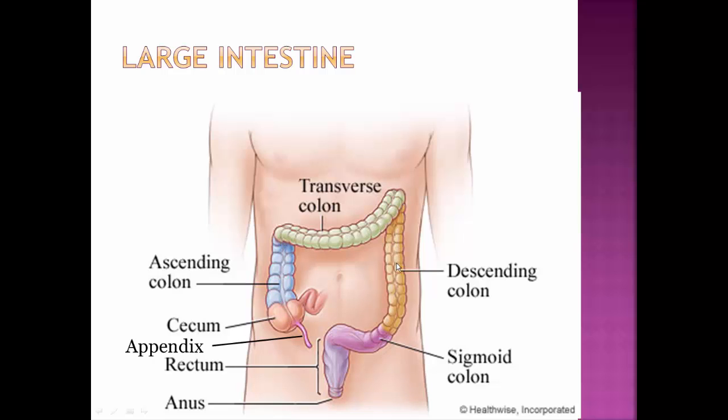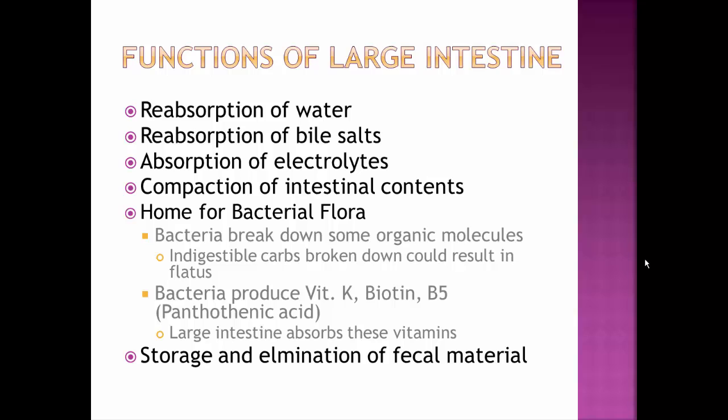From the ascending colon, material continues through the transverse colon, descending colon, sigmoid colon, and then the rectum and anus as it travels — and then of course we get rid of it.